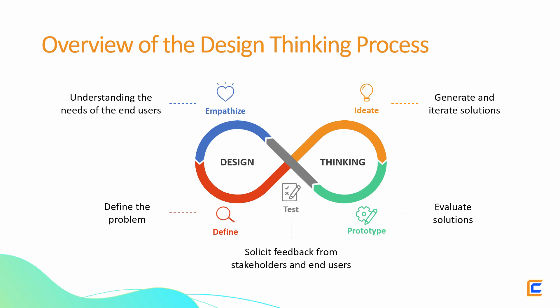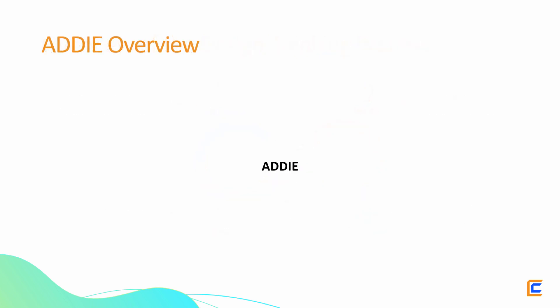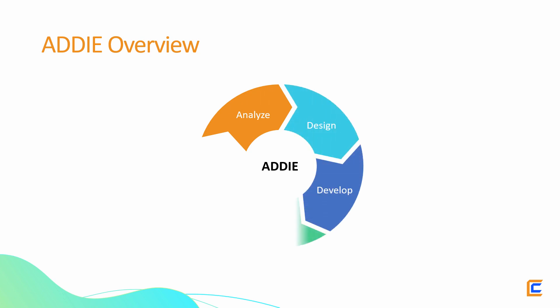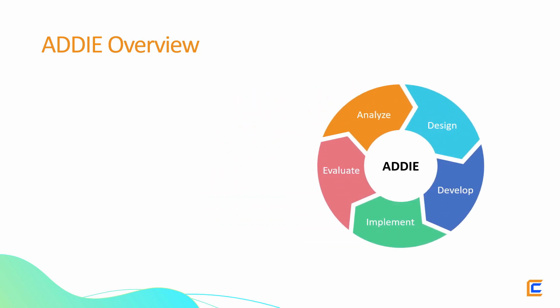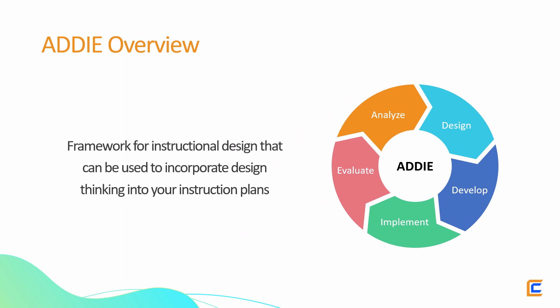The design thinking process is an iterative one, and it is through this continuous cycle of learning and refinement that the best solutions are found. The ADDIE model comprises five phases: analysis, design, development, implementation, and evaluation. The ADDIE model is a framework for instructional design that can be used to incorporate design thinking into your instruction plans.